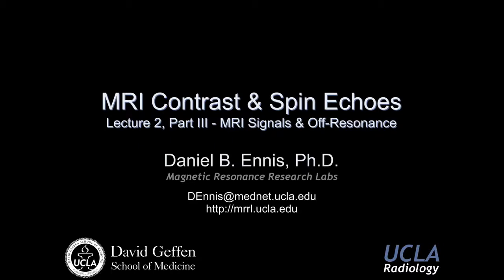This lecture is part of a series of lectures for a course entitled The Physics of Diagnostic Radiology. The second lecture, MRI contrasts and spin echoes, is broken down into four parts. Lecture one, part three covers MRI signals and off-resonance.